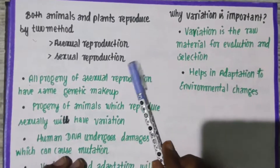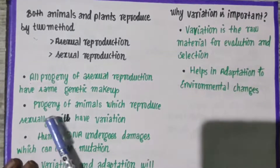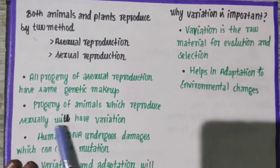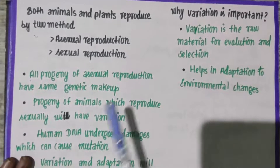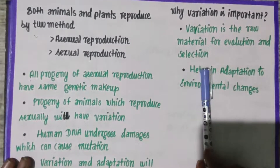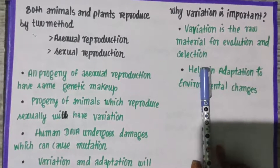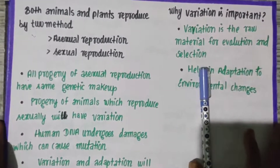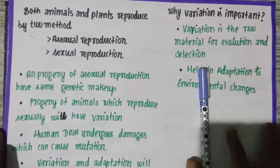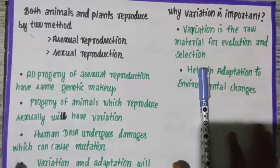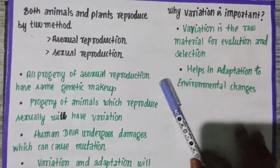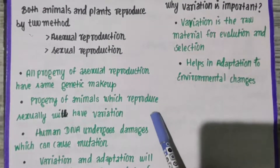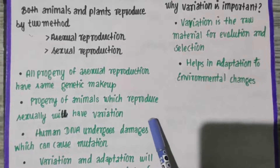The progeny of animals which reproduce sexually will have variation. So in sexual reproduction, there is a possibility of variation. Next, we will understand about mutation.